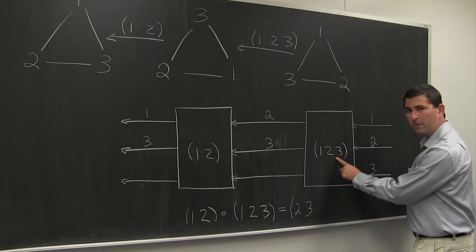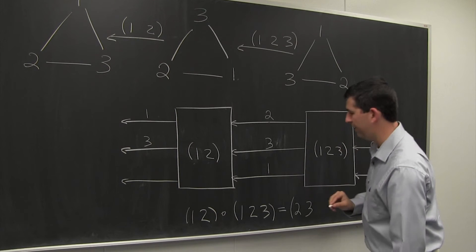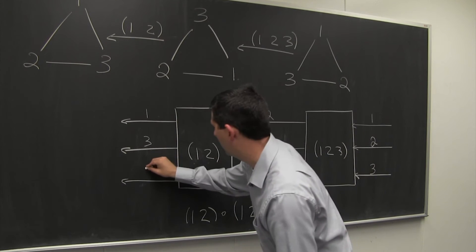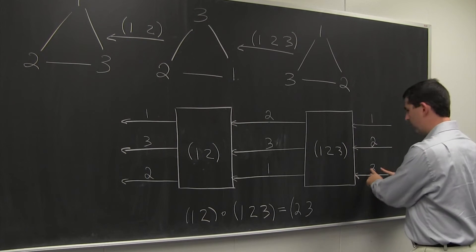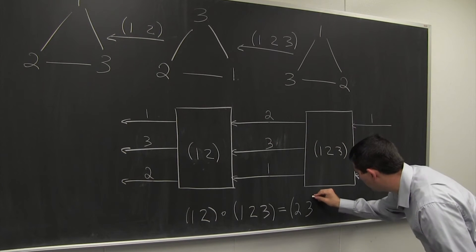So 3 goes into the first permutation, and 3 is sent to 1. So 1 comes out on the left, and now 1 goes into the second permutation, and 2 comes out. So in total, 3 is sent to 2. And so we can close our cycle.